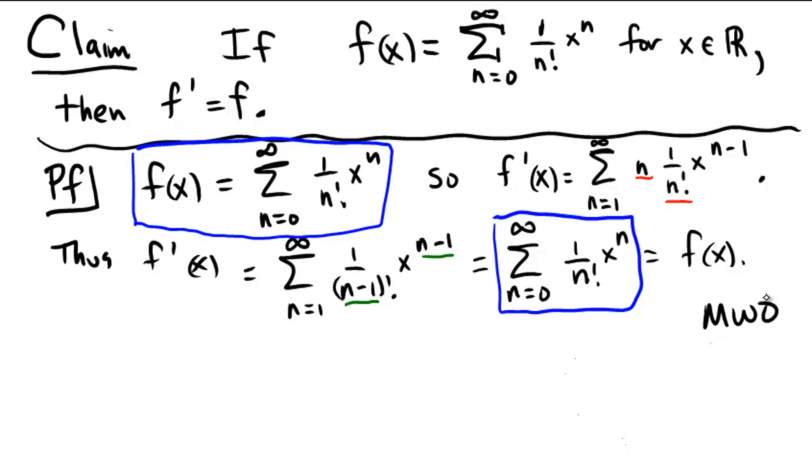For the extra credit, did anybody notice what function that was? When you have a derivative equal to itself, the only function whose derivative is equal to itself would be f of x equals a constant times e to the x. In this case, since when we plug in 0 we're going to get a value of 1, our constant must be 1. So this function is literally the e to the x function. That's the function's power series, and it has the property that its derivative is equal to itself.